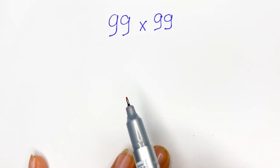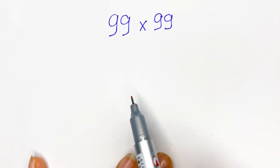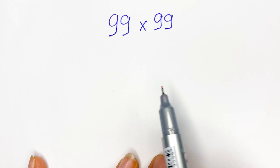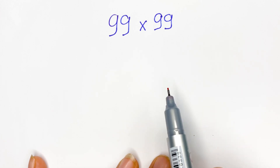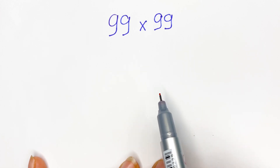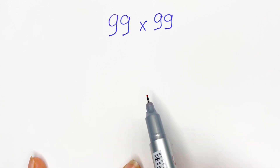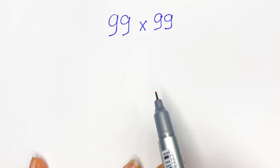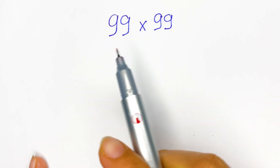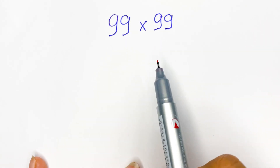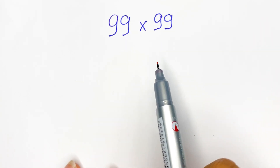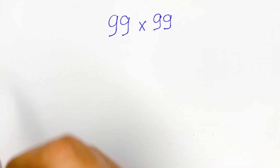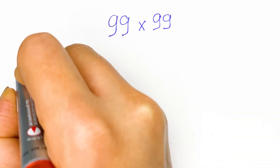Hello, now we are going to have three best ways to calculate an expression without using a calculator. In this case, we can calculate 99 times 99. Everyone, see the first way.